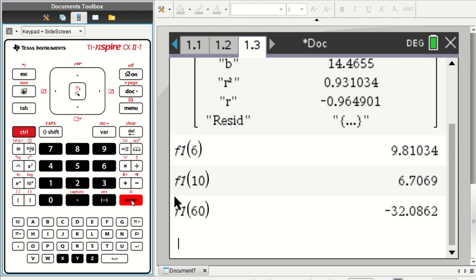Interpolation, you know, using a number within the values of the data makes sense generally. Extrapolation maybe makes sense, but we have to be careful. We're making an assumption that the pattern continues and maybe it doesn't.